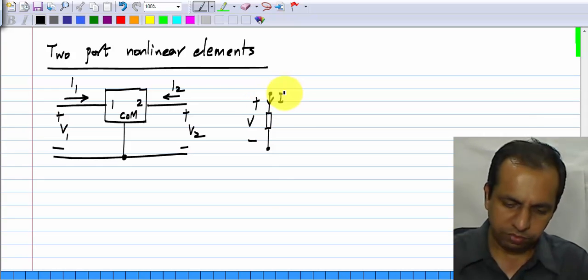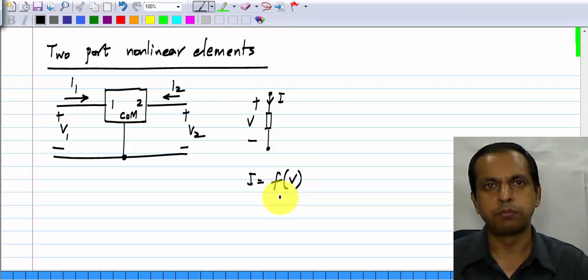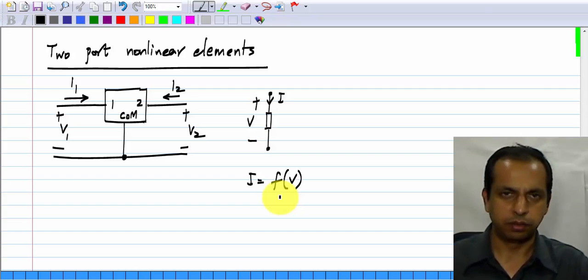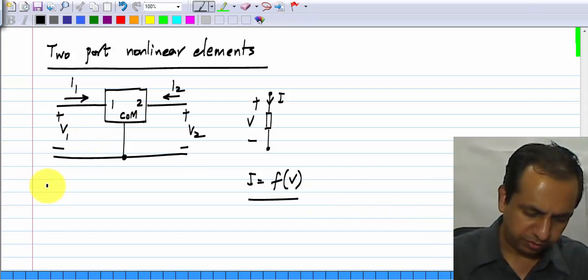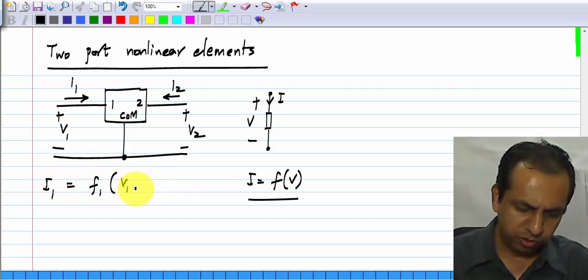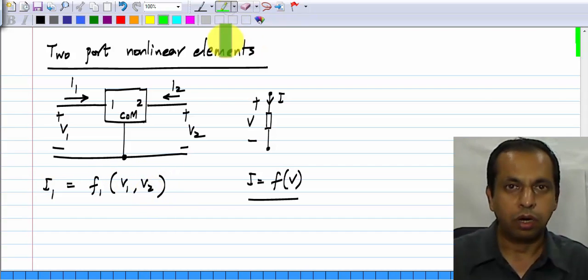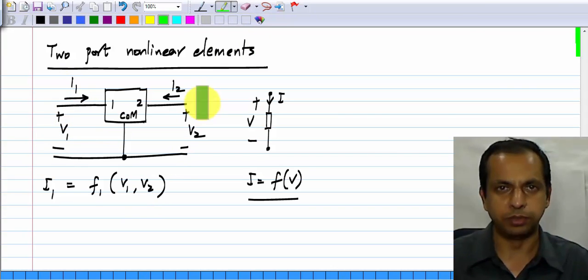In case of a single port or a two terminal nonlinearity, we could define I as a function of voltage. Of course, we can also do the other way round, define the voltage V as a function of current, but we choose this representation. And in this case, we will say that I1 is some function of both V1 and V2. All it says is that the current going into this depends on both V1 and V2.